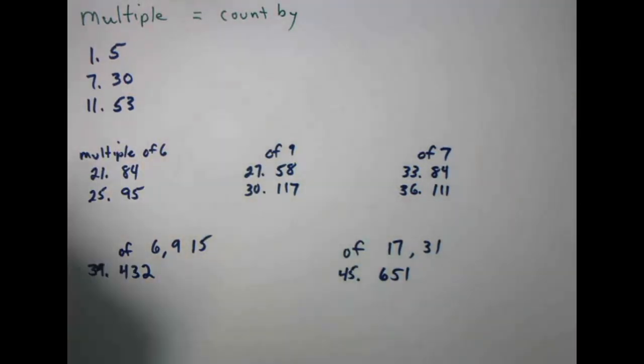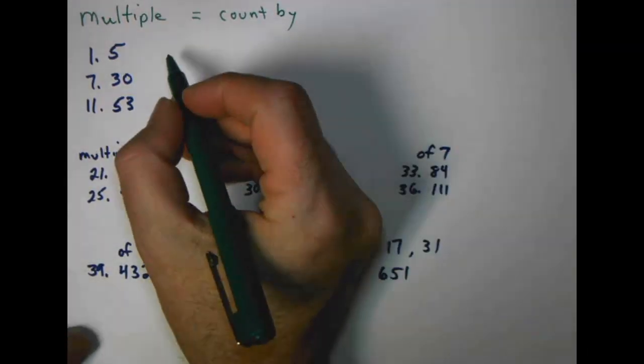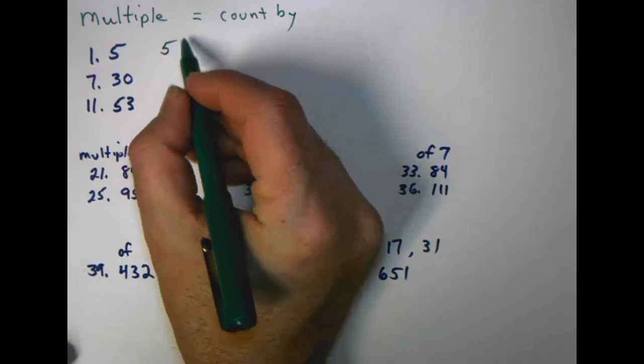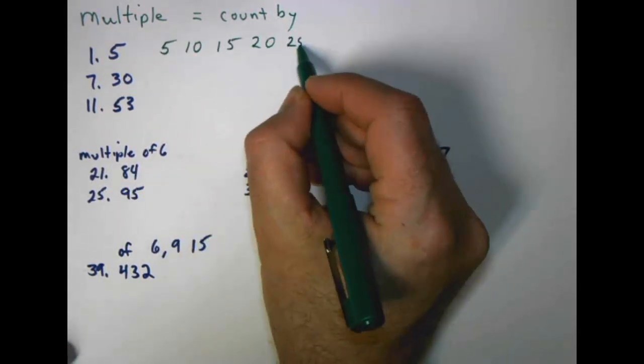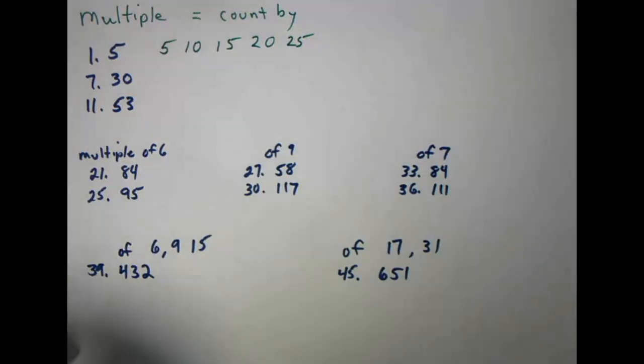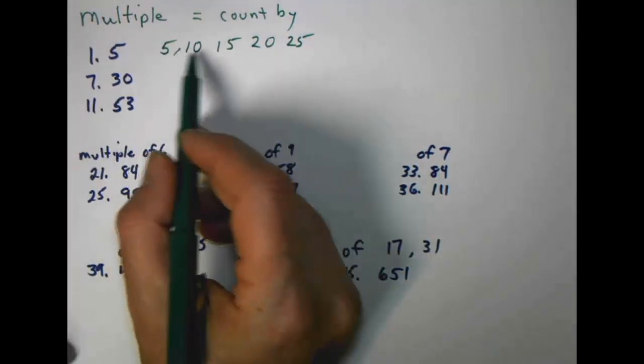So if I'm doing the first five multiples of the number five, I'm simply counting by five. So five, ten, fifteen, twenty, twenty-five, and so on. Just simply counting by five. These are multiples.